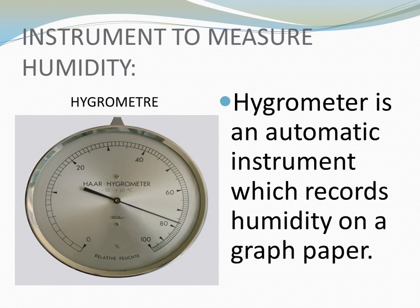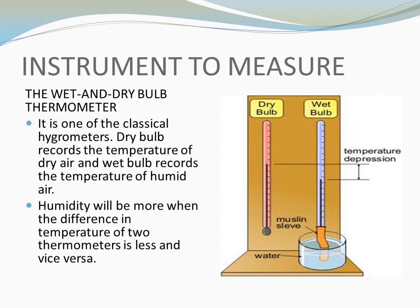The instrument used to measure humidity is the hygrometer. The hygrometer is an automatic instrument which records humidity on a graph paper, expressed in percentage. Another instrument to measure humidity is the wet and dry bulb thermometer, which is one of the classical hygrometers. The dry bulb records the temperature of dry air and the wet bulb records the temperature of humid air. Humidity will be more when the difference in temperature between the two thermometers is less, and vice versa.